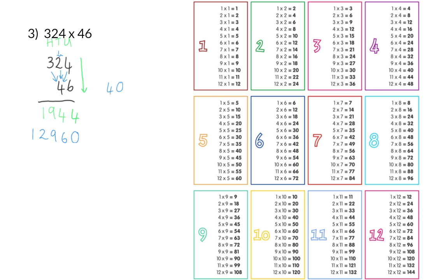Now we have addition, and again, using our columns, we can add this together. Here we have 4 plus 0 is 4, and next, 4 plus 6 is 10, of which we only write the 0 because the 1 is added to the hundreds. Now we have 9 plus 9 is 18, plus that 1 is 19, and again, we only write the 9 and add the 1 to the thousands. And here we have 1 plus 2 is 3, plus the extra 1 is 4, and finally, we only have a 1. So our final answer is 14,904.